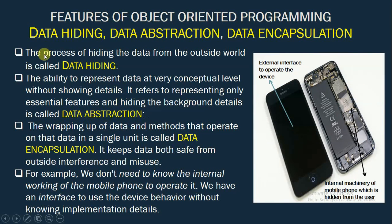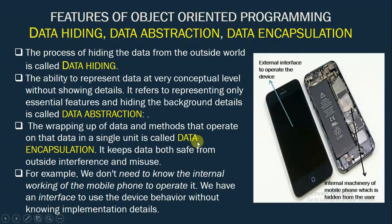Data hiding is the process of hiding the data from the outside world. Data abstraction is the ability to represent data at a very conceptual level, showing only the specific details which are needed. It refers to representing only the essential features and hiding the background details. Data encapsulation is the process of wrapping up data and the methods that work on this data into a single entity. It keeps data both safe from outside interference and misuse.